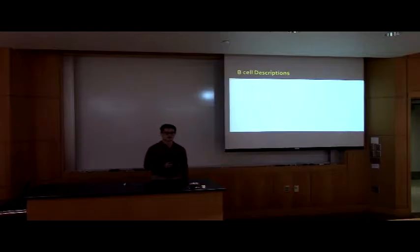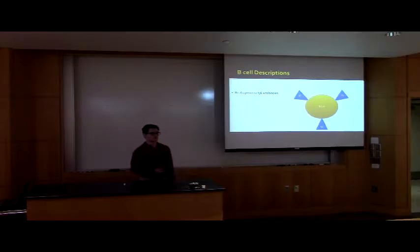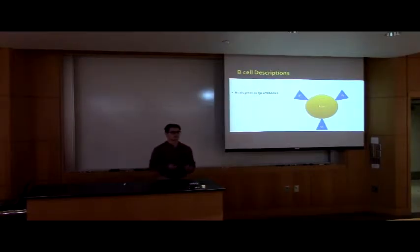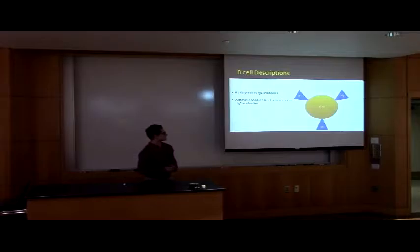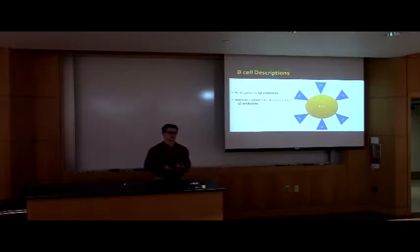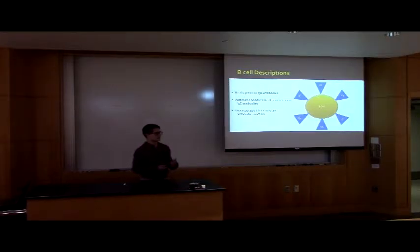A little bit about B cell description. Your B cell produces these IgE antibodies. And what's crazy about people who have asthma, they produce more antibodies than a normal person would. This leaves us more susceptible to having an asthmatic symptom, such as coughing and wheezing.